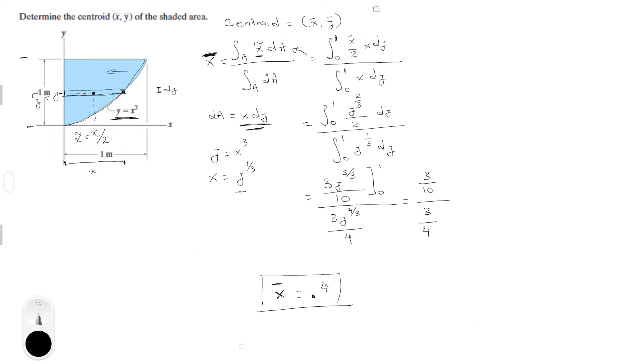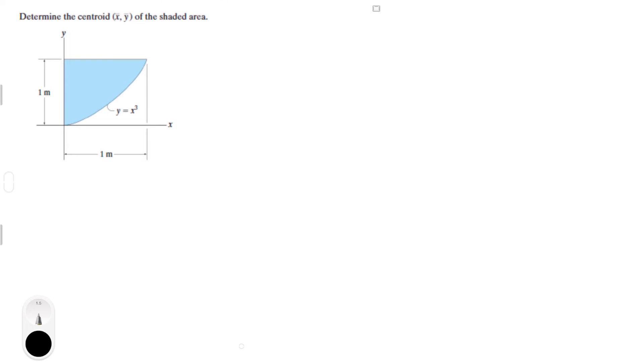So now we need to find the other point, so let me do a new page for that but it's the same idea. ȳ is equal to the integral of y curly dA all over dA, and what we got to do is replace the values in the equation for what we already know.